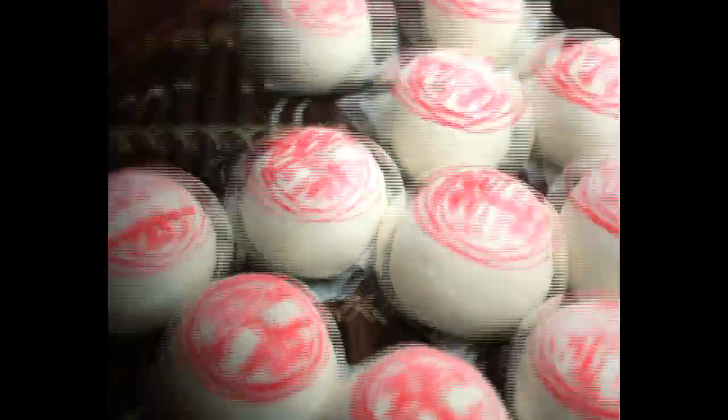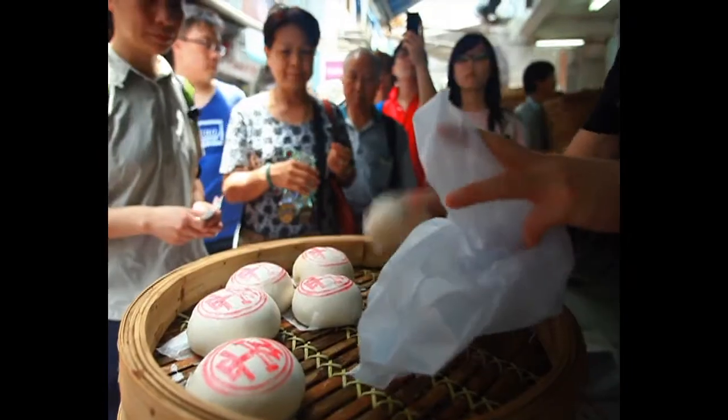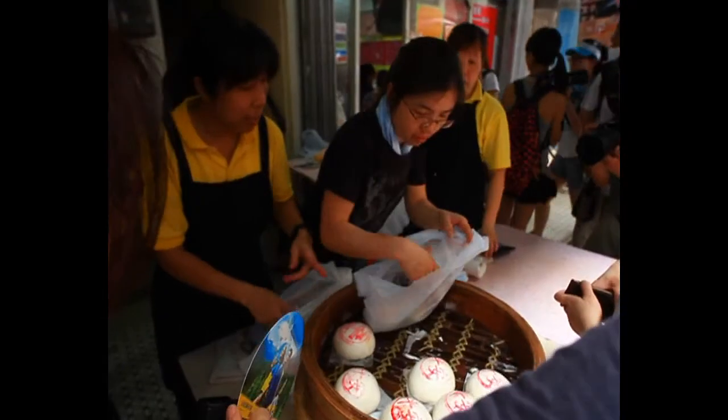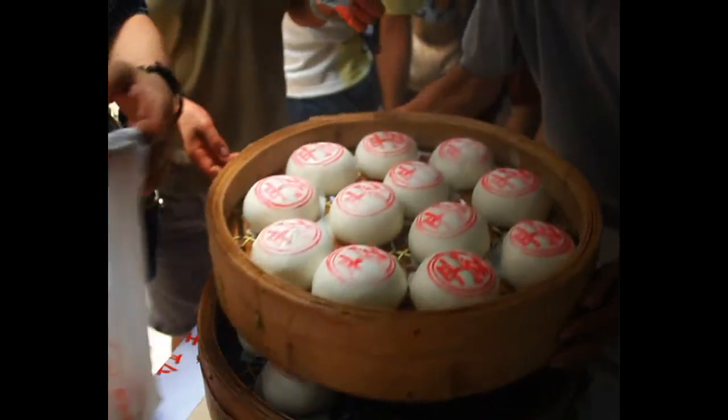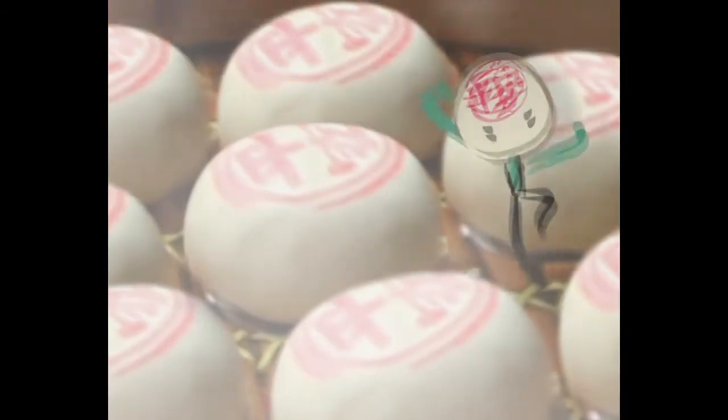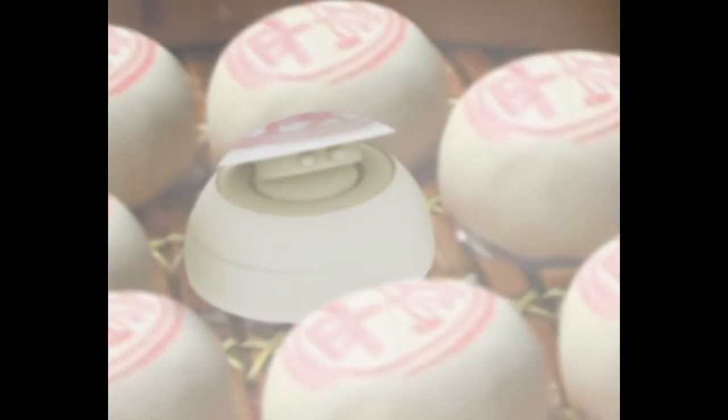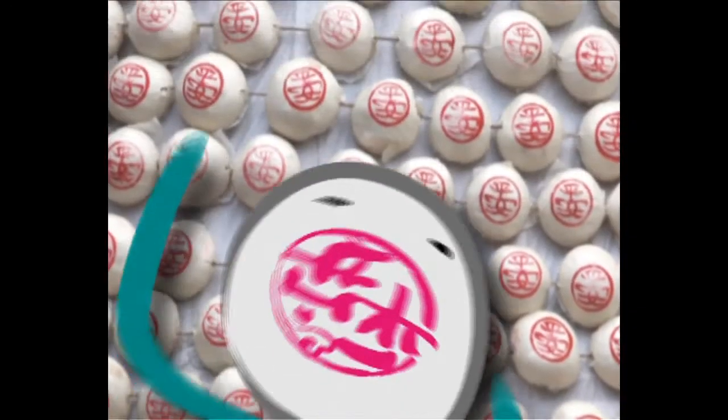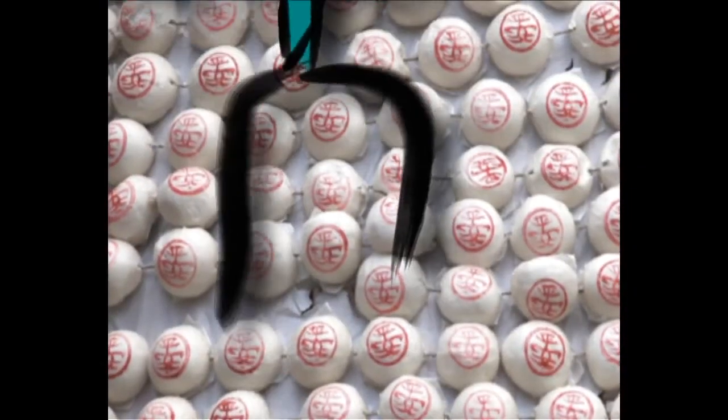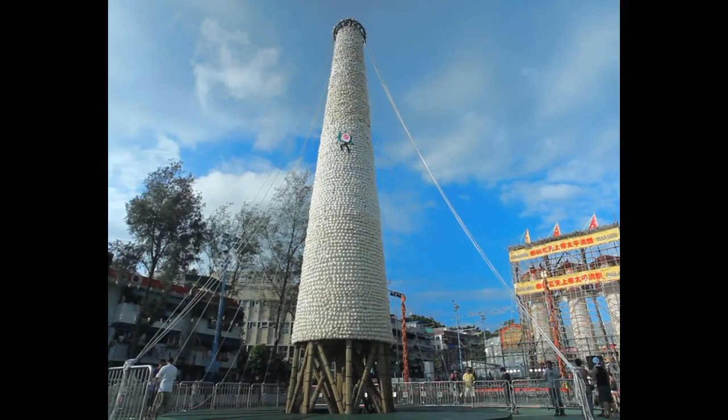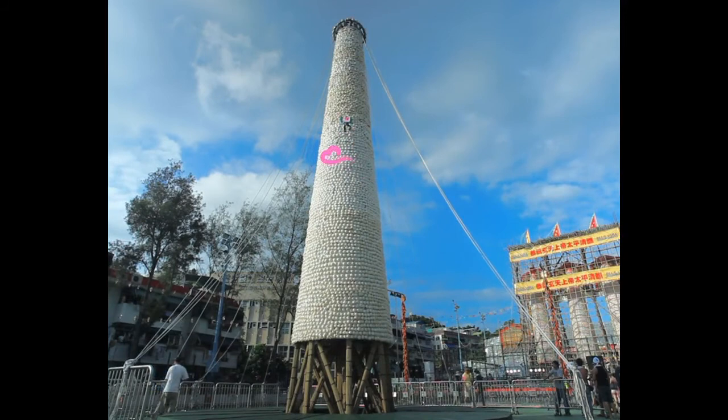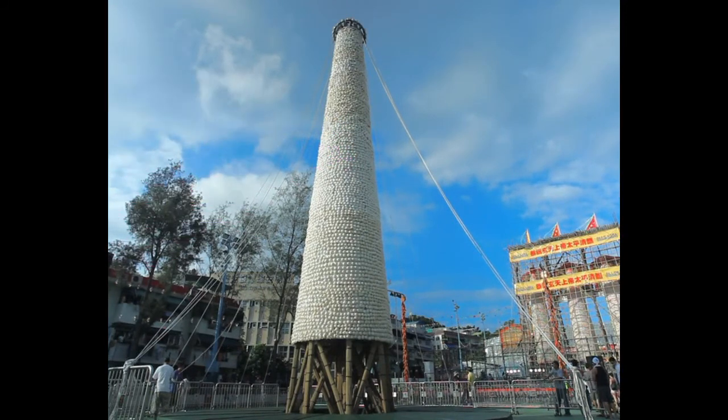These buns are also the main characters of the festival. They are known as Peng On Bun. It is said that it will offer peace to people taking the bun. This is called the Bun Tower, which is formed with over thousands of Peng On Buns.